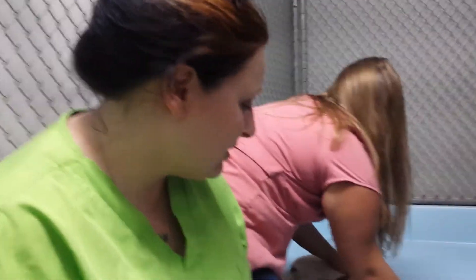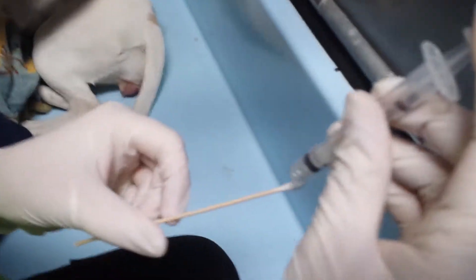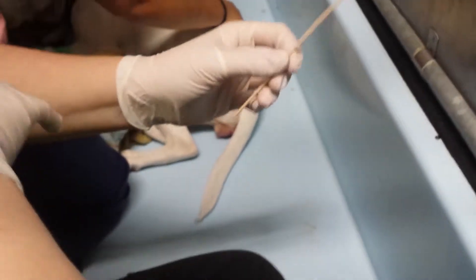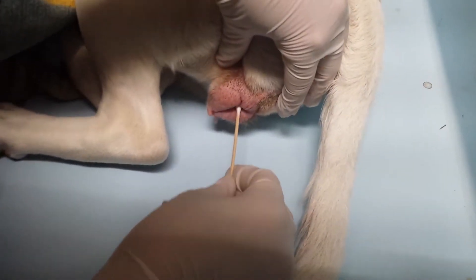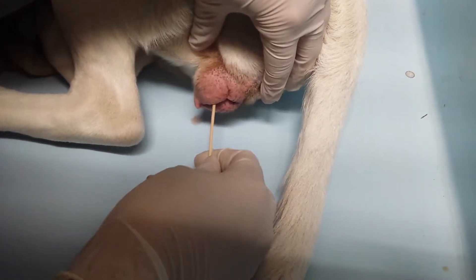This is task number 13, so we're going to do a vaginal smear. We're going to moisten our swab here in some saline, and then Morgan holds her. We're gonna go ahead and gently insert and rotate so we get a good sample of cells. And then we're going to go back out here to our microscope.